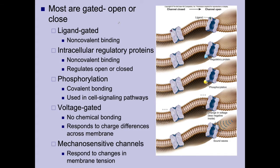Most channels are gated — either opened or closed. There are five types of gated channels. The first is ligand-gated, where non-covalent binding occurs between the protein and a ligand. This is not the same as a ligand binding to a receptor for signaling; here the ligand opens the channel because its concentration is high enough that the cell needs to start transporting it. This is used quite a bit in the drug industry to help open channels.